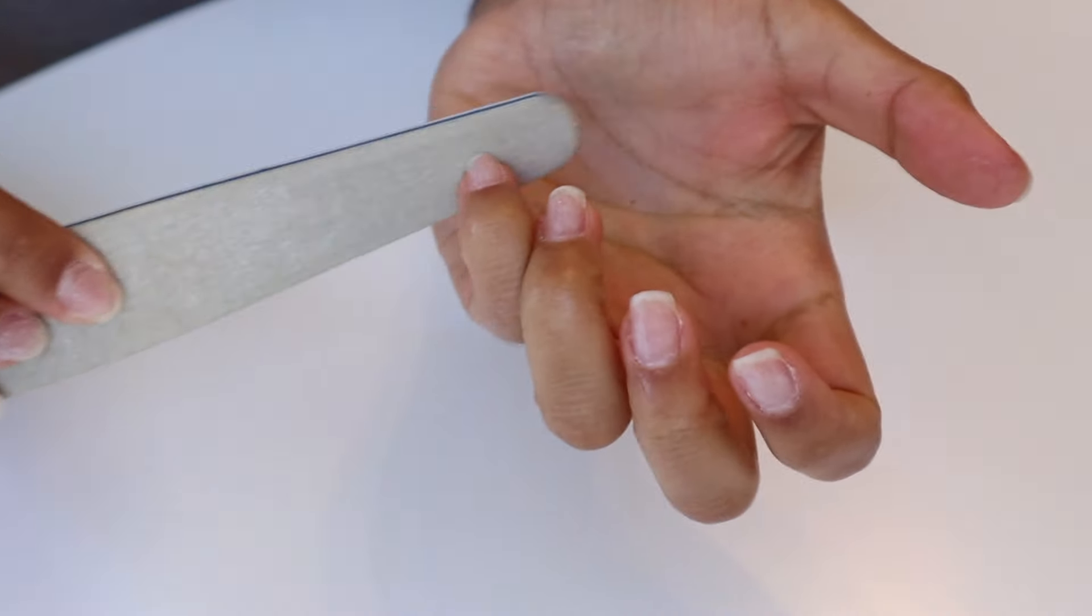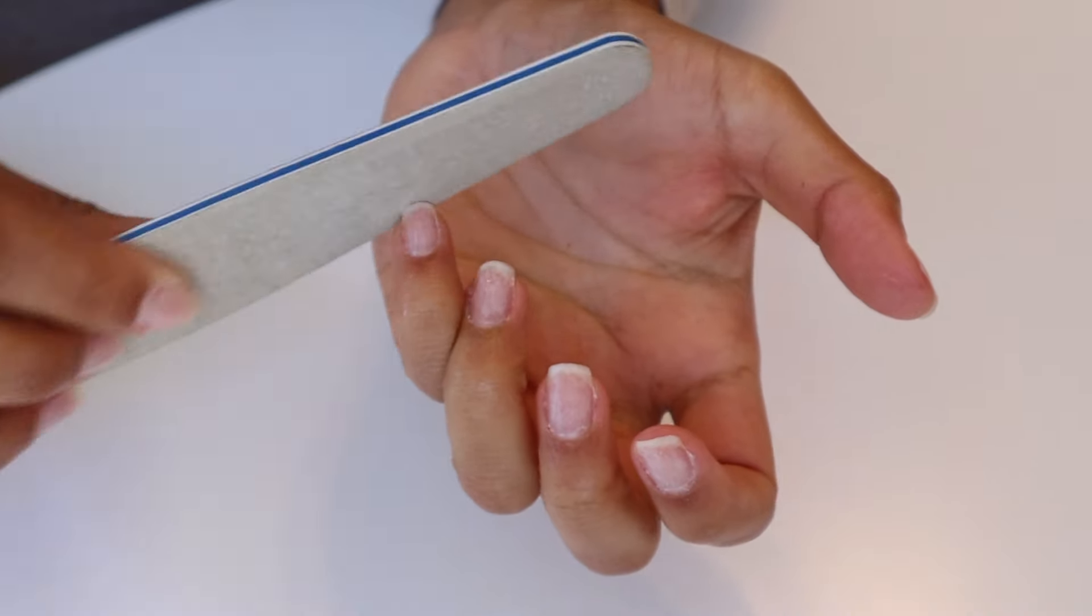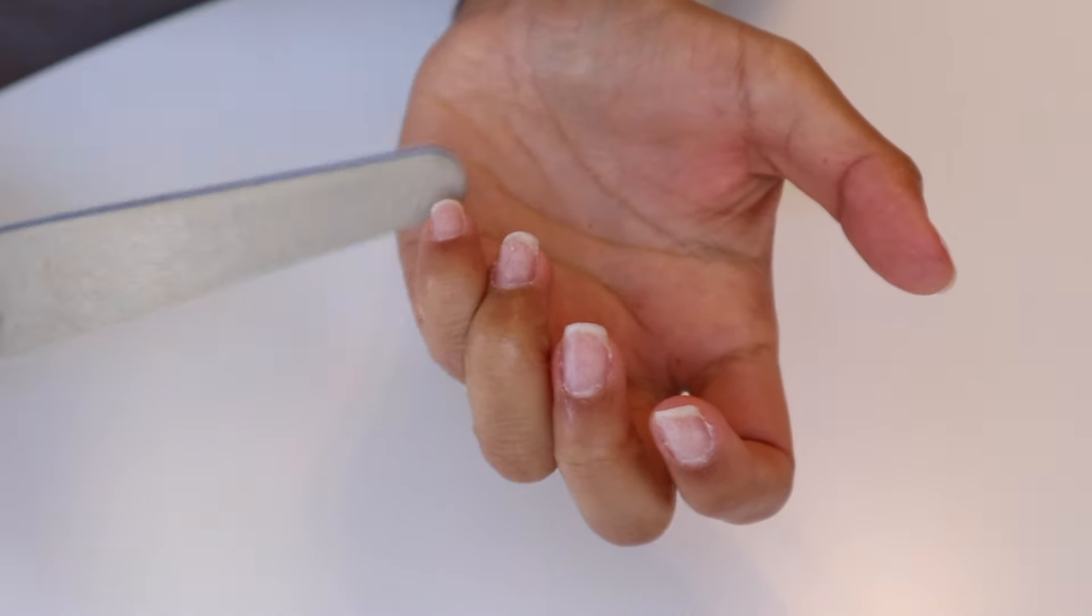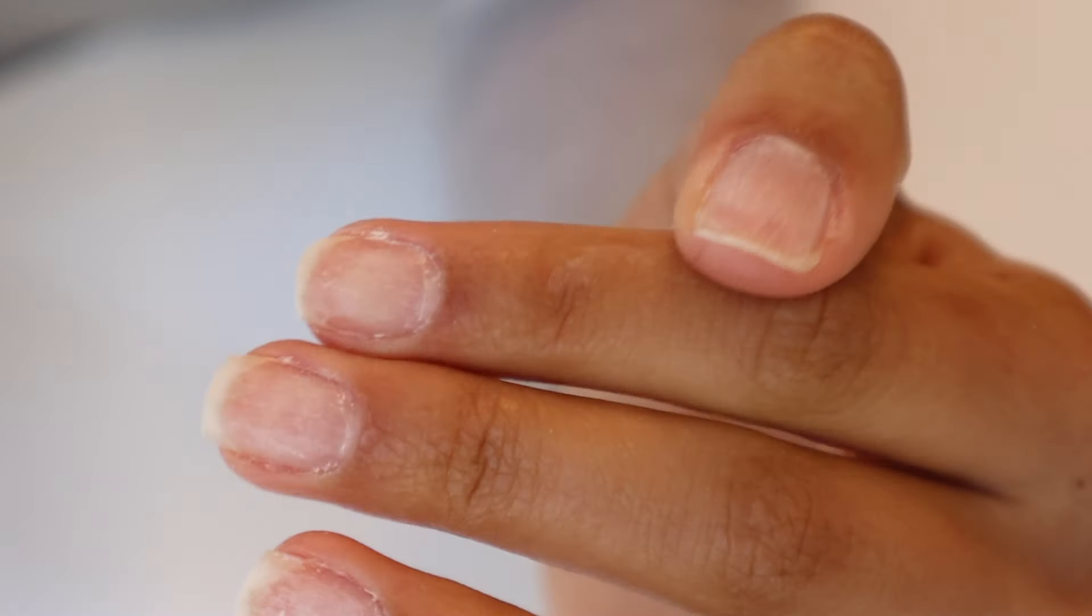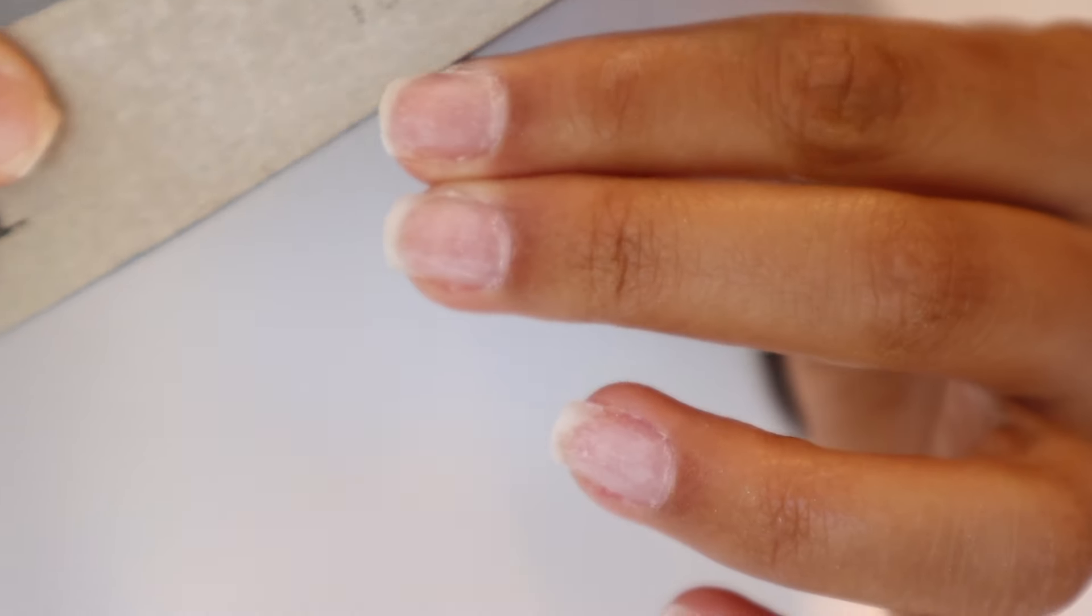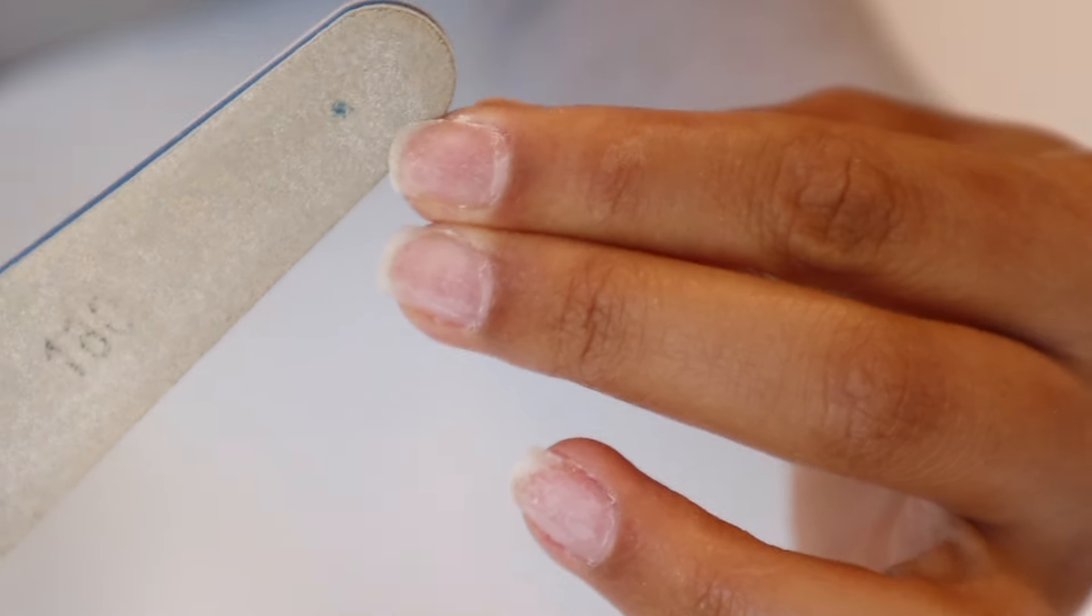And this next step, you can either clip your nails if you don't like the length, but if you're already happy with it you can just file your nails down. I wanted to show you a super important part of this process, which is to round your nails. This is just going to prevent them from breaking or chipping later on.